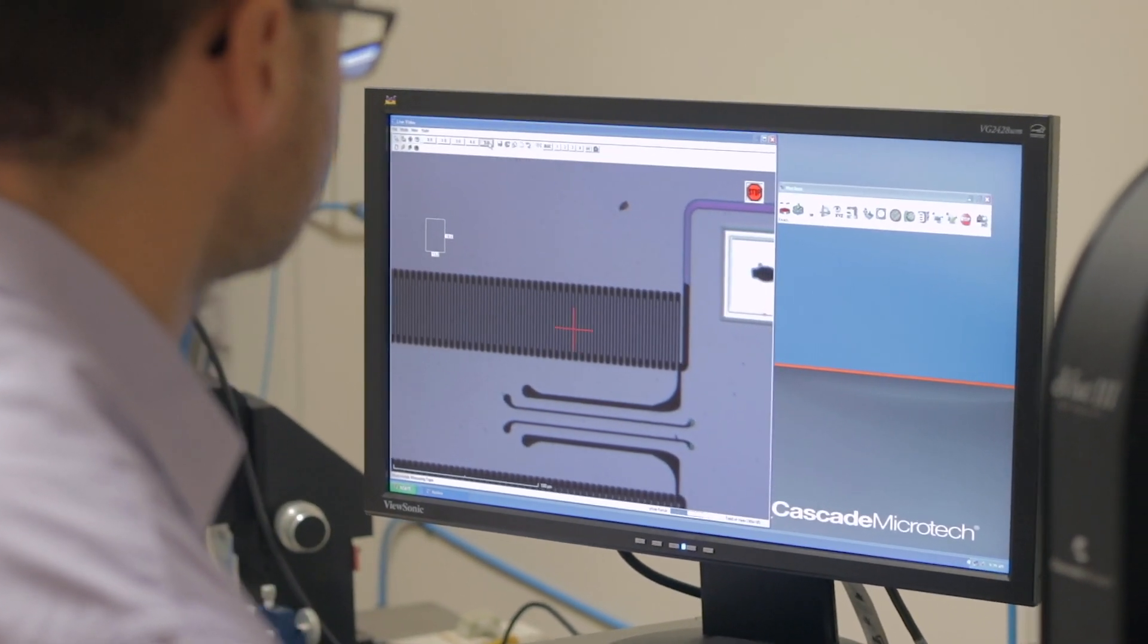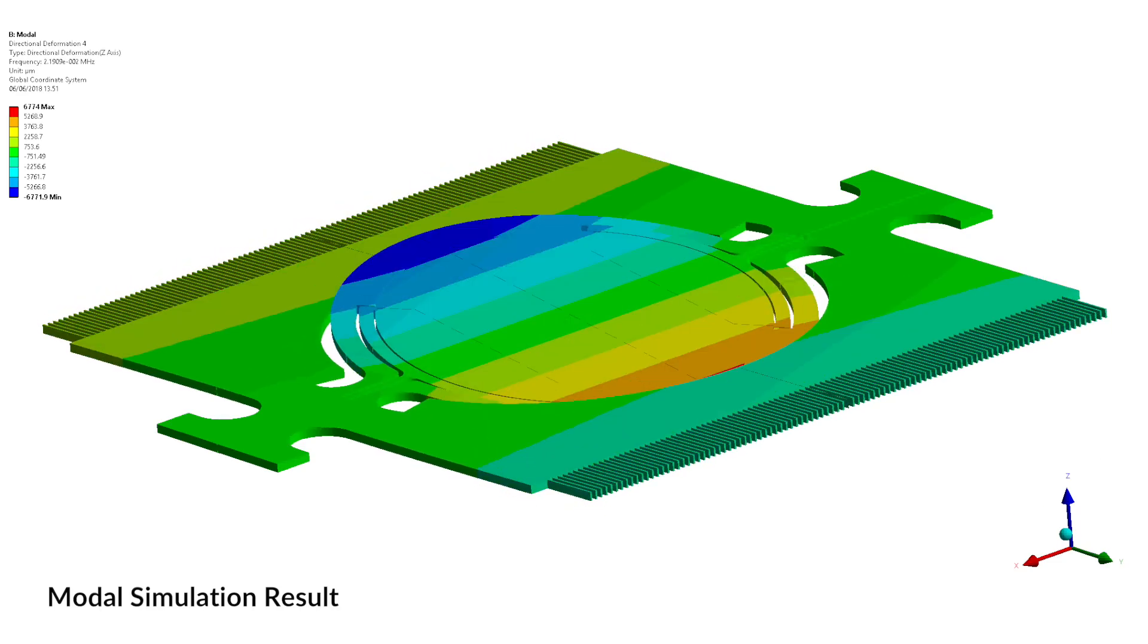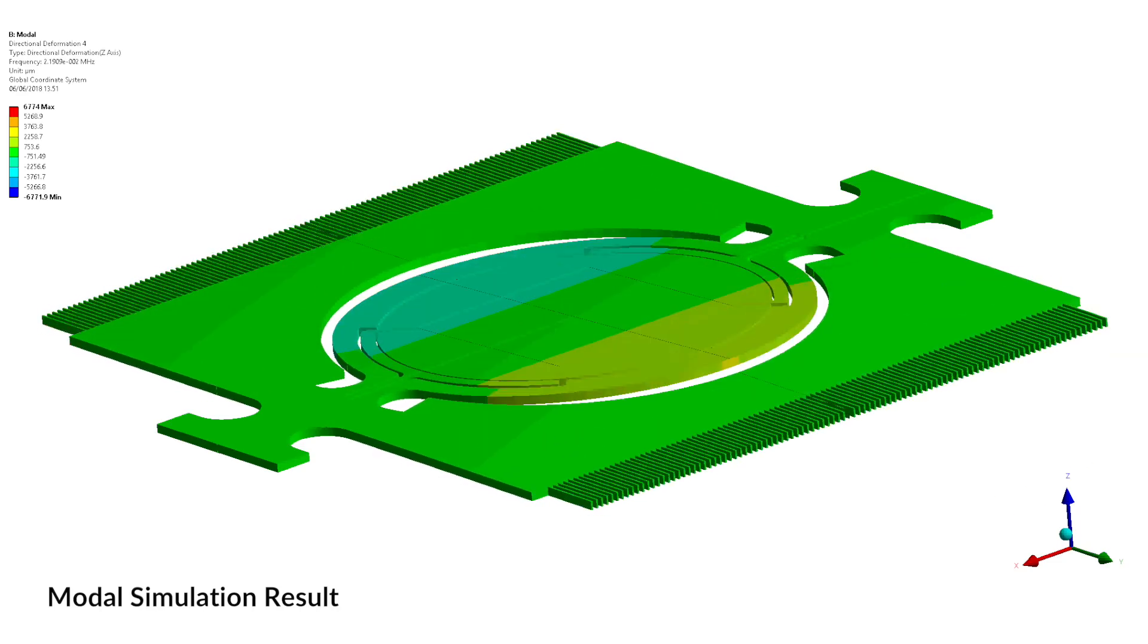For example, we need to consider the deformation of the micromirror when it is oscillating at a very high frequency, and also the effect of friction due to the air which is surrounding the micromirror.